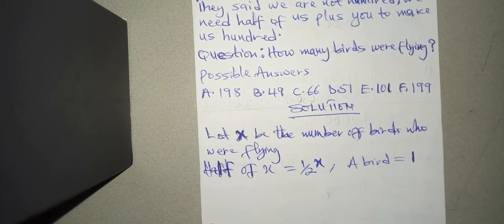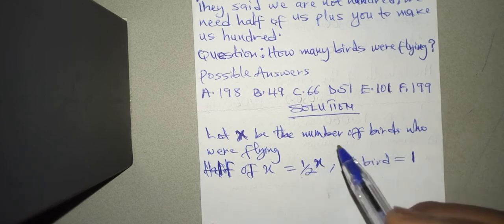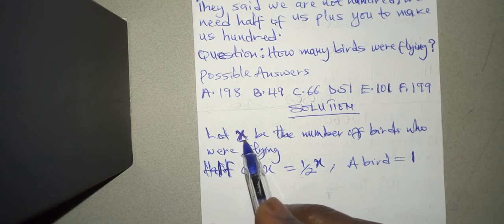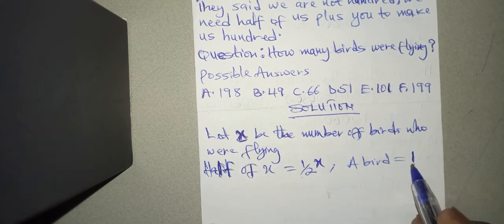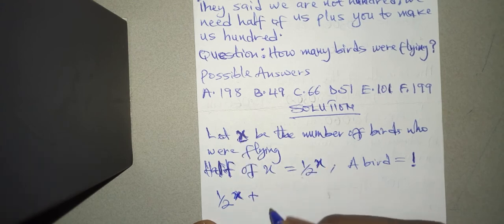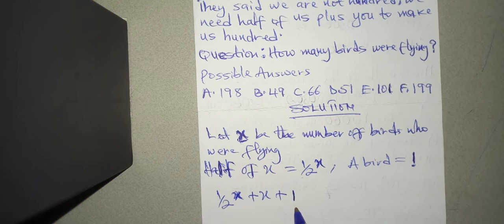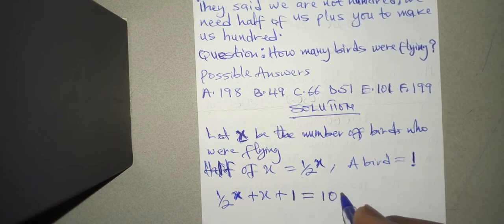All right, now according to them, they are saying that they need half of them, so half of them plus that single bird to give them 100. So we are going to say that half x plus this x plus that bird whose definite value is 1, so I'll put 1 here. Now the whole of this should give us 100, so this is directly equal to 100. All right, so we have 100.